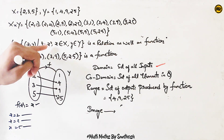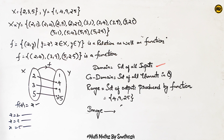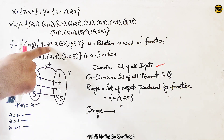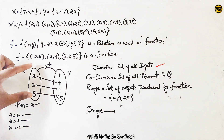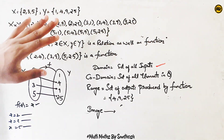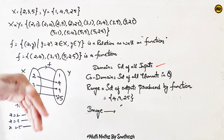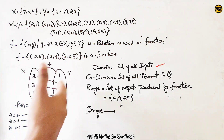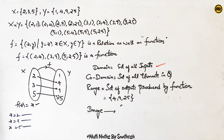You can use domain. If you have a domain, the domain is equal to x squared. If the domain has 3 elements, you can use these sets. If you want to write the domain, you will have domain — we will discuss that later. Set of all inputs, we call it the domain.